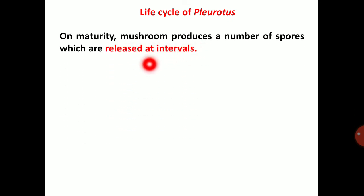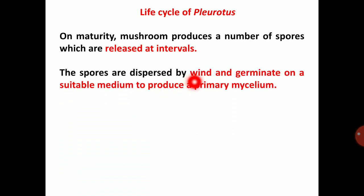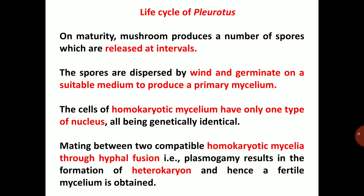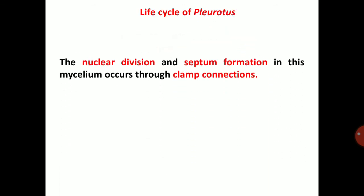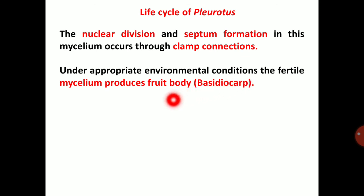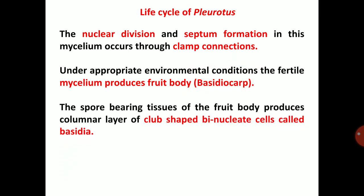On maturity, the mushroom produces many spores which are released at intervals. These spores are dispersed by wind and germinate on a suitable medium to produce primary mycelium. Cells of homokaryotic mycelium have only one type of nucleus, all being genetically identical. Mating between two compatible homokaryotic mycelia through hyphal fusion — plasmogamy — results in the formation of a heterokaryon; hence a fertile mycelium is obtained by somatogamy. Nuclear division and septum formation occur through clamp connections. Under appropriate environmental conditions, the fertile mycelium produces a fruiting body, the basidiocarp.